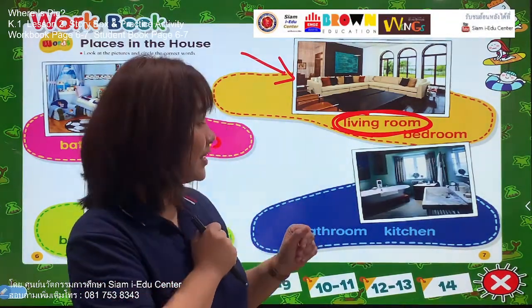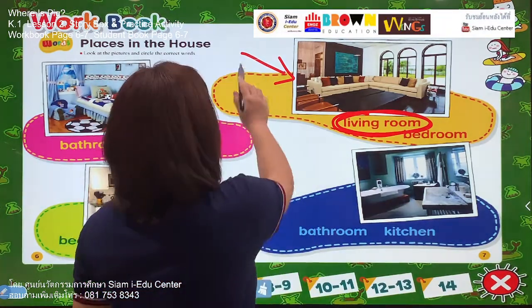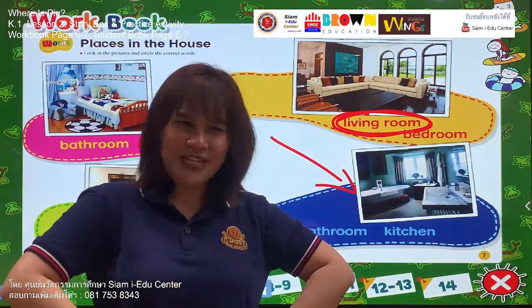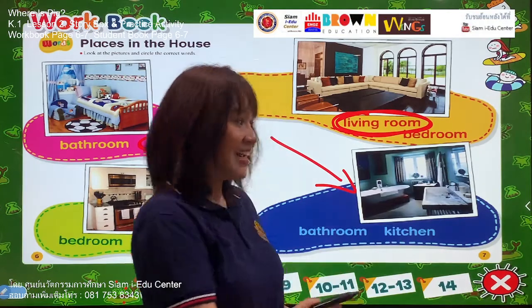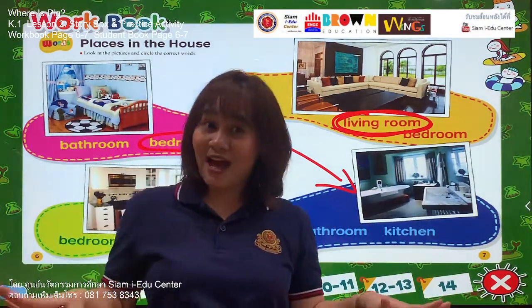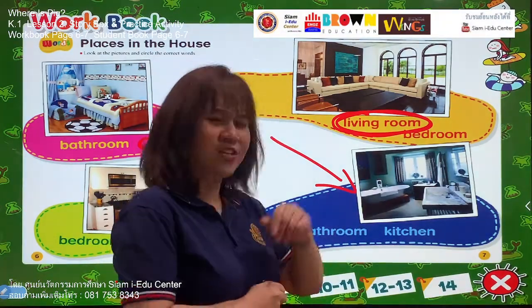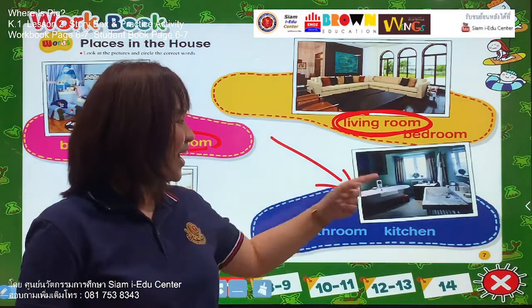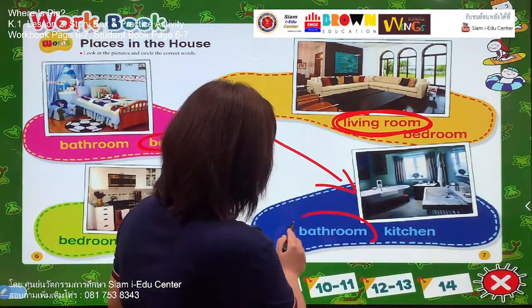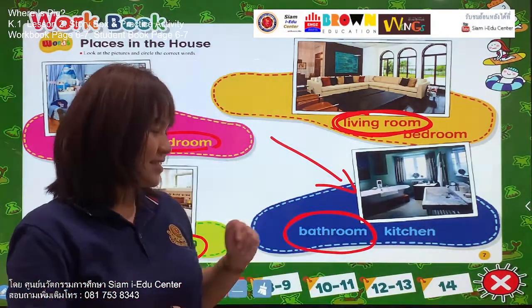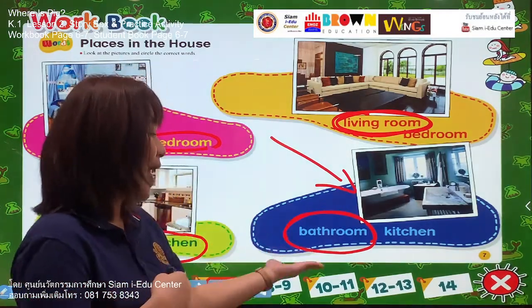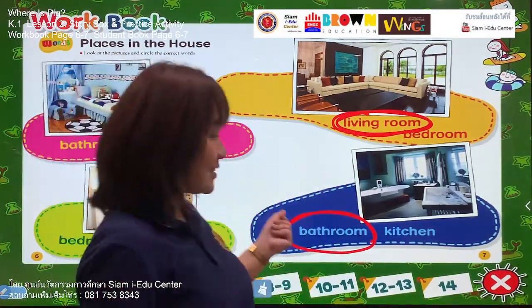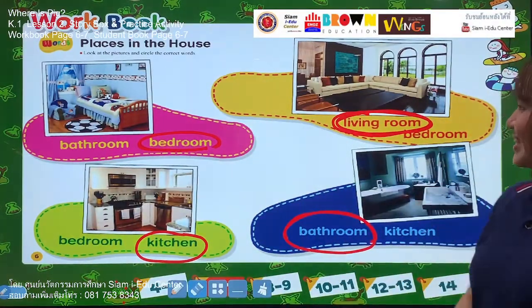We move to the large picture on page 7. Look at this room carefully. What can you see? Can you see the sink? Yes. The mirror is here. And this thing we can see is a bathtub. How do we call this room? Is it a kitchen? No! What about bathroom — is this a bathroom? Yes! Great work — this room we call a bathroom. Let's circle the right word: bathroom. Your turn — bathroom. Very nice. Have you finished with the exercise on page 6 and 7? Yes! Great work, students.